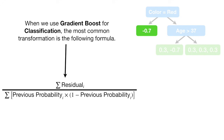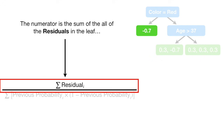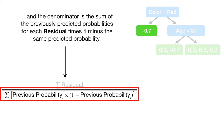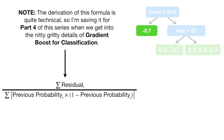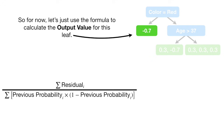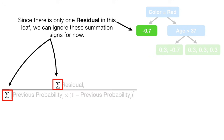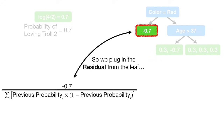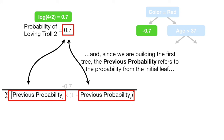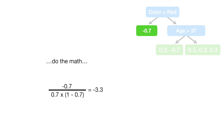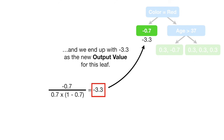When we use gradient boost for classification, the most common transformation uses the following formula. The numerator is the sum of all the residuals in the leaf. The denominator is the sum of the previously predicted probabilities for each residual times 1 minus the same predicted probability. Note: the derivation of this formula is quite technical, so it's being saved for part 4. For now, let's use the formula to calculate the output value for this leaf. Since there is only one residual in this leaf, we plug in the residual and the previous probability from the initial leaf, do the math, and we end up with negative 3.3 as the output value.